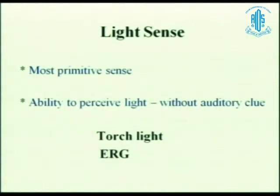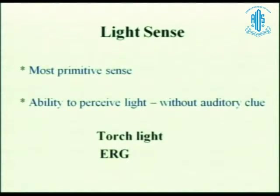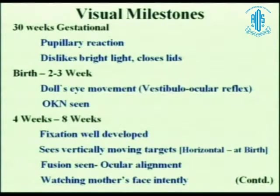Light sense is the most primitive sense — the ability to perceive light without any auditory clue. When the patient comes to you in the OPD, you have to show the torchlight but you don't have to give an auditory clue. ERG is something very similar to giving a flash and getting the photoreceptor response. Similarly, flash VEP gives you the response from the occipital cortex when you put a flash light.